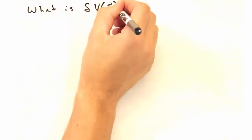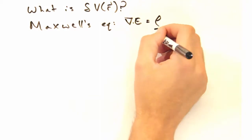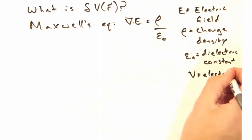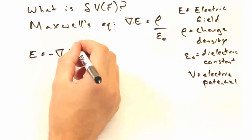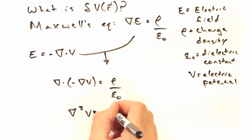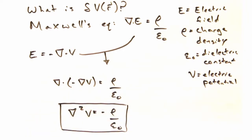Now we have the tools to figure out this delta V. We'll need to start with Maxwell's equation for the divergence of E. And I know E is just the grad of the potential V. So now we have minus delta squared V equals rho over epsilon not.